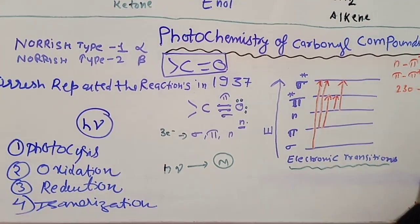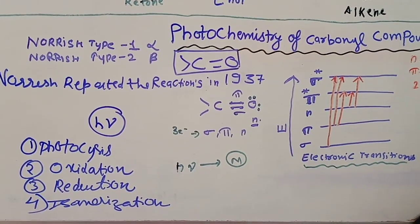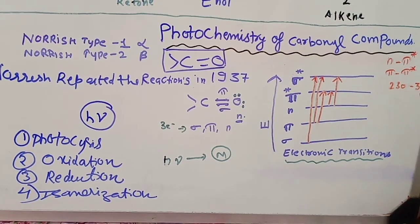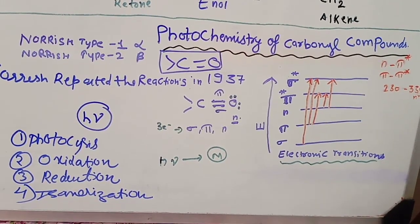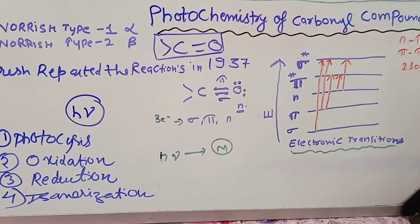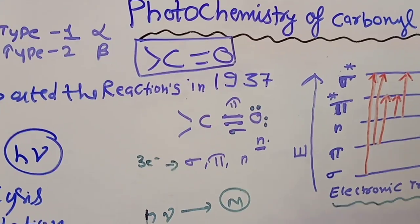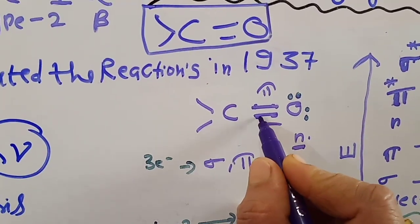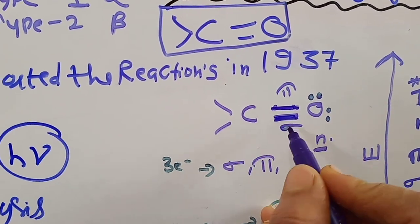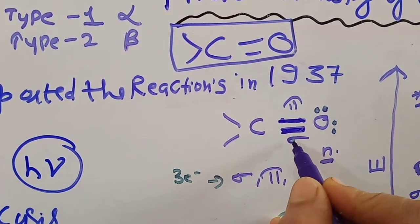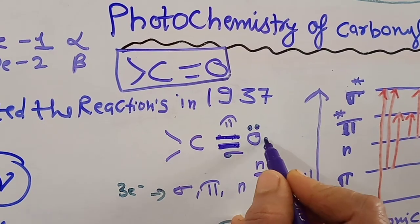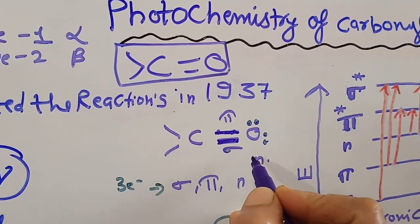Let me discuss the electronic transitions taking place in carbonyl compounds when they absorb light radiations of 230 to 330 nanometers. If we see the structure of a carbonyl group, there is one sigma and one pi bond in the C double bond O group. This sigma bond is made up of sigma electrons and the pi bond is made up of pi electrons. Oxygen also has two lone pairs of electrons.